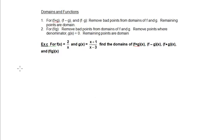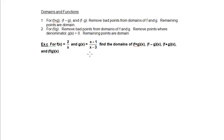We're going to look at the domains of some combined functions. It's sometimes easier to think of domain in terms of what points are not allowed rather than what points are allowed. The two main restrictions that we find on domains occur when we have points that are undefined, and one way that we get undefined points is by having zeros in the denominator.